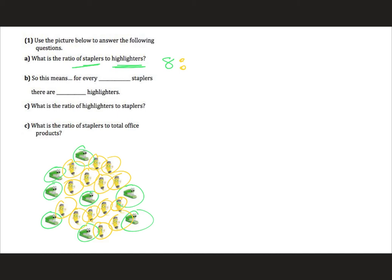So we have eight staplers to fourteen highlighters. Now when we are writing a ratio we can always simplify it just like we can simplify a fraction. So eight and fourteen, they have a common factor of two. So we can divide both of these by two and this gives us four staplers to seven highlighters.